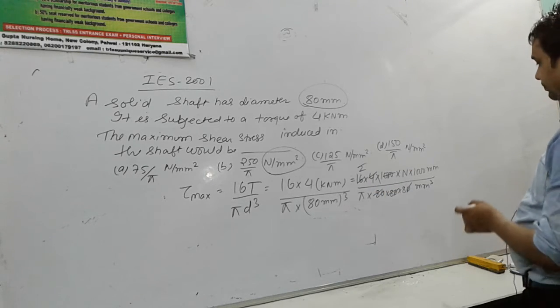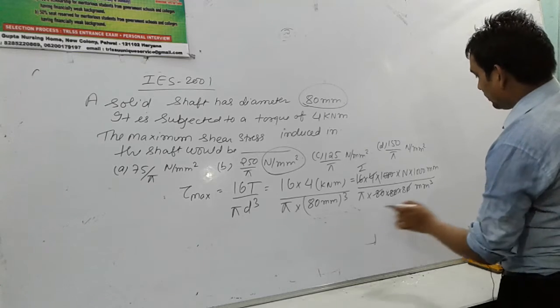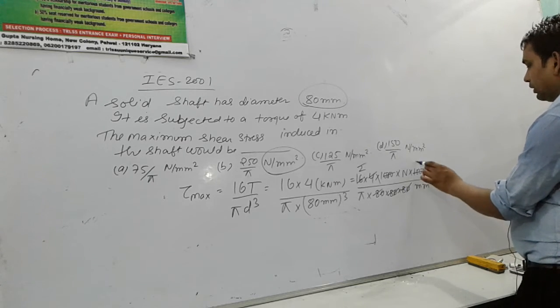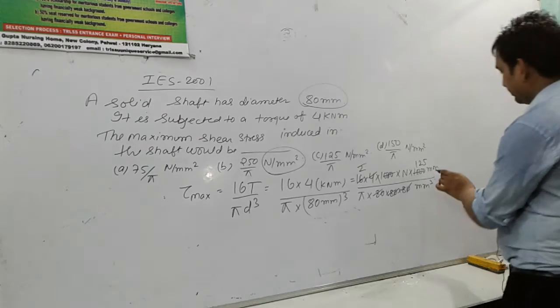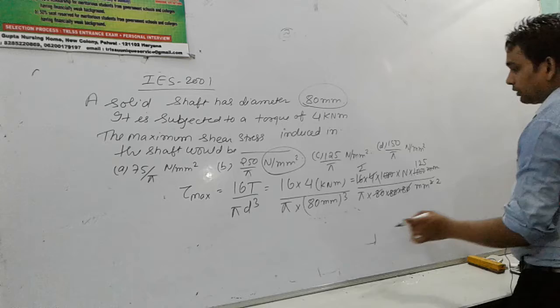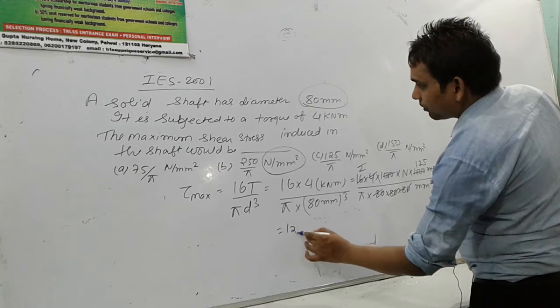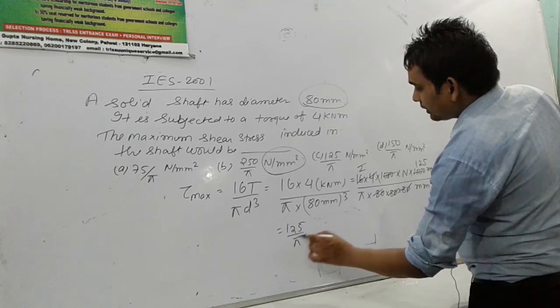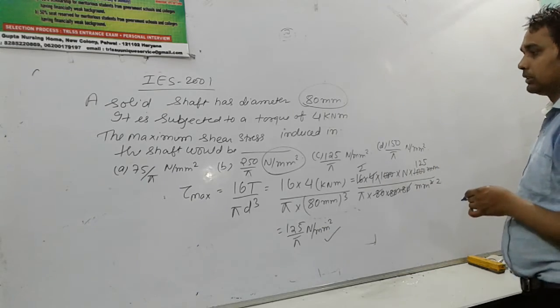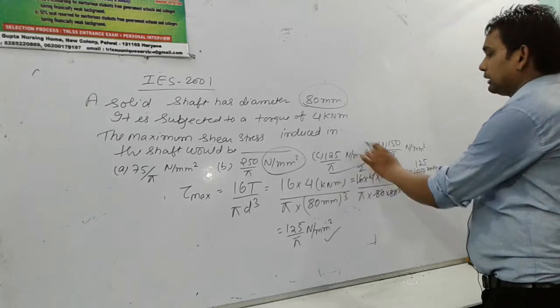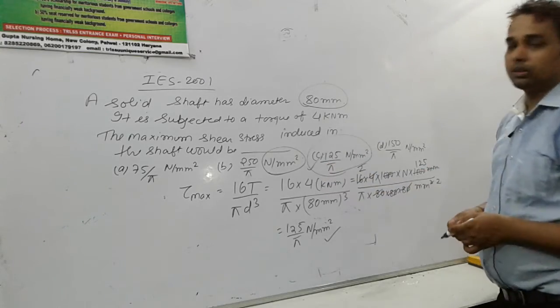So now we will get 8. So 1 to 5. Now we are getting 125 upon π Newton per meter square simplified. So C is the correct answer of this question.